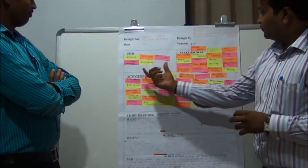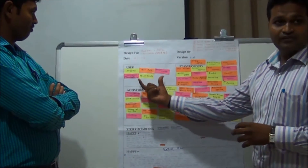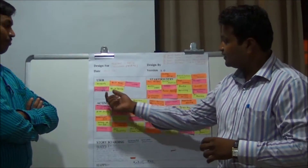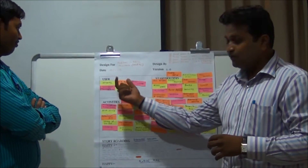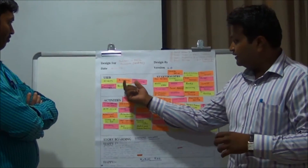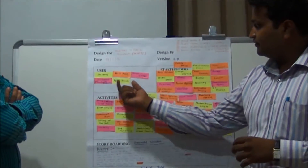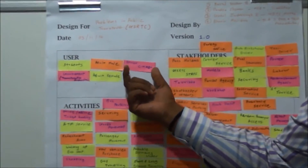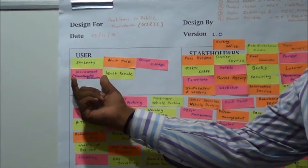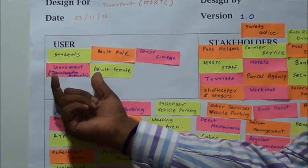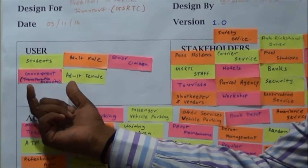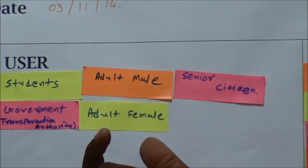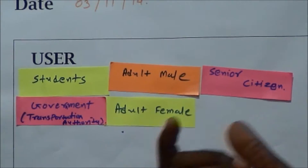We have classified some users, and those users are students, adult male, adult female, senior citizens, and government itself. Particularly in government, the transportation authority is the main user.